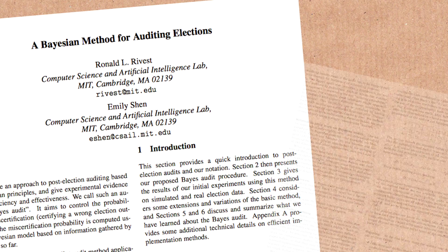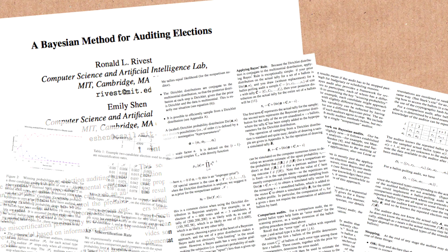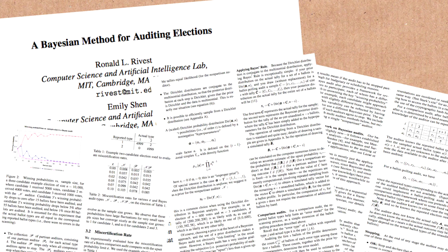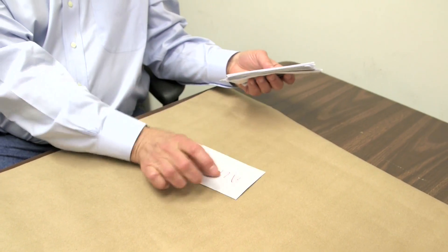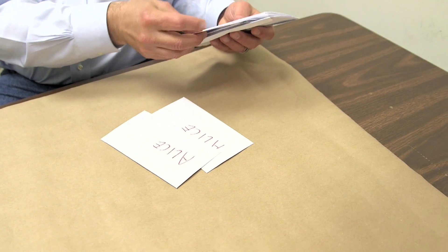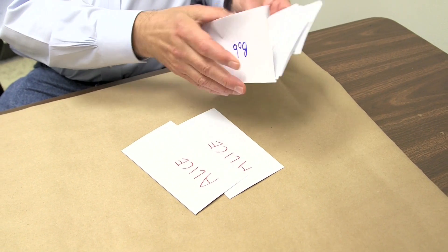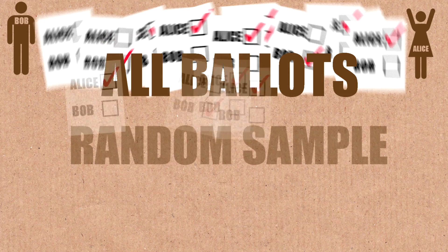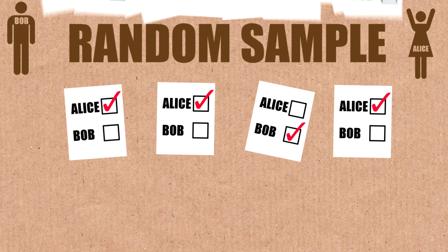There are a couple of ways of doing an audit. I'm going to describe one called a Bayesian audit that was developed by a student of mine, Emily Shen, and myself. Like most audits, it starts with a sample. So we take a few samples — here's one, I'm just drawing at random, here's one — we choose some initial size of the sample. That looks pretty much like it's an Alice win, but that's just a sample, and who knows if there's enough data to really tell. It depends a bit on how close the election is — if it's a very close election, a small sample may not be enough.